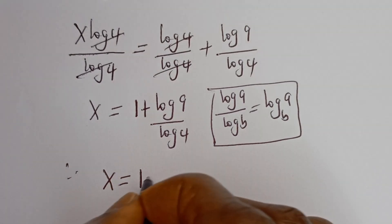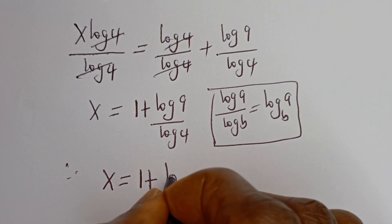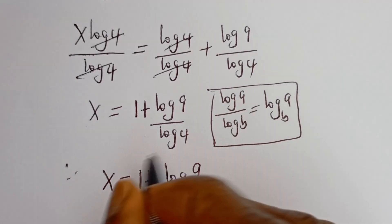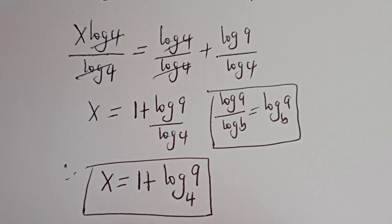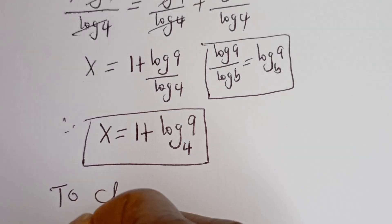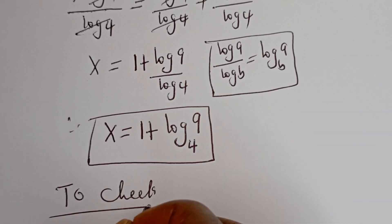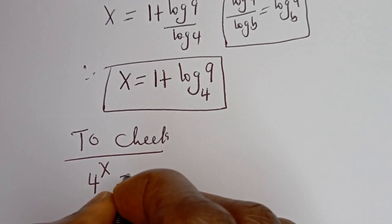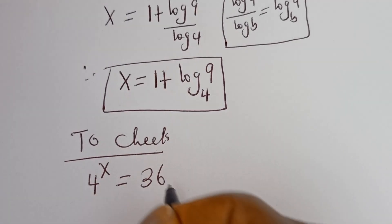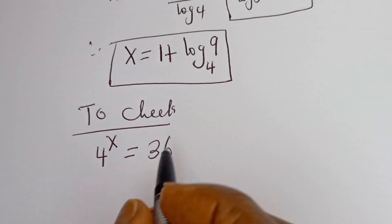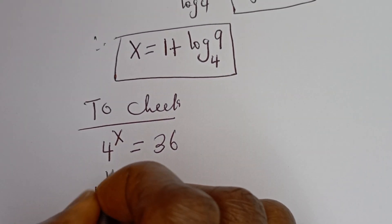So x is equal to 1 plus log 9 base 4. This is the final answer. We can check to confirm if this answer is right or wrong. We have the given equation: 4 to the power of x is equal to 36. When x is 1 plus log 9 base 4, we have 4 to the power of 1 plus log 9 base 4.